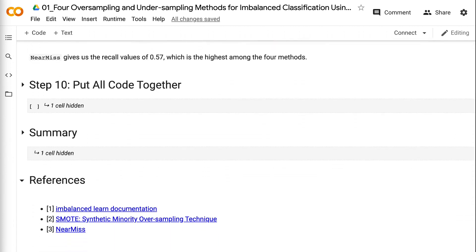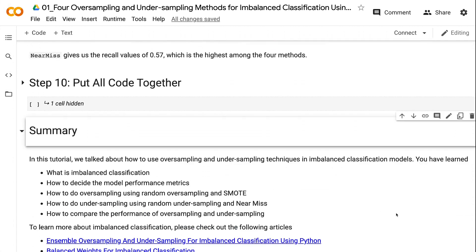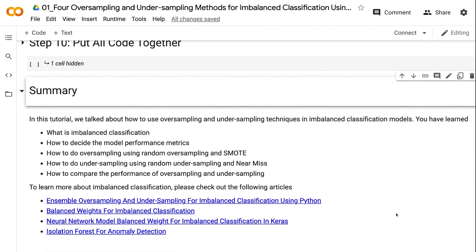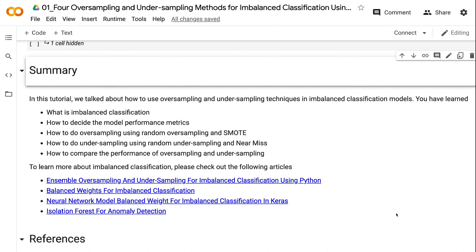In this tutorial, we talked about how to use oversampling and undersampling techniques in imbalanced classification models. You have learned what is imbalanced classification, how to decide the model performance metrics, how to do oversampling using random oversampling and SMOTE, how to do undersampling using random undersampling and near-miss, and how to compare the performance of oversampling and undersampling.